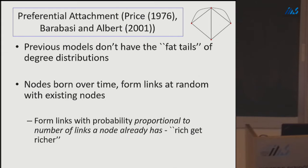This is an important driver of inequality. Preferential attachment gives a network-based story for why extreme inequality emerges: links feed back into more links, and if links translate into opportunities or wealth, that matters for societal outcomes. You can also model link disappearance—friendships come and go—which would attenuate the fat tail, with the degree distribution depending on the rate of link loss.